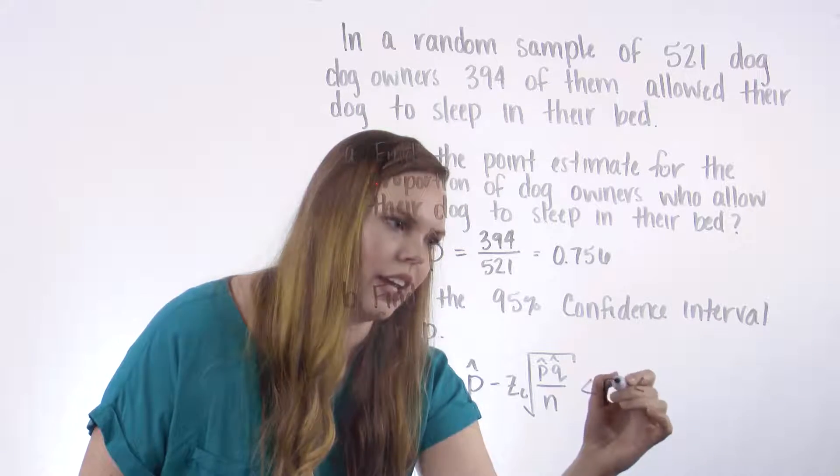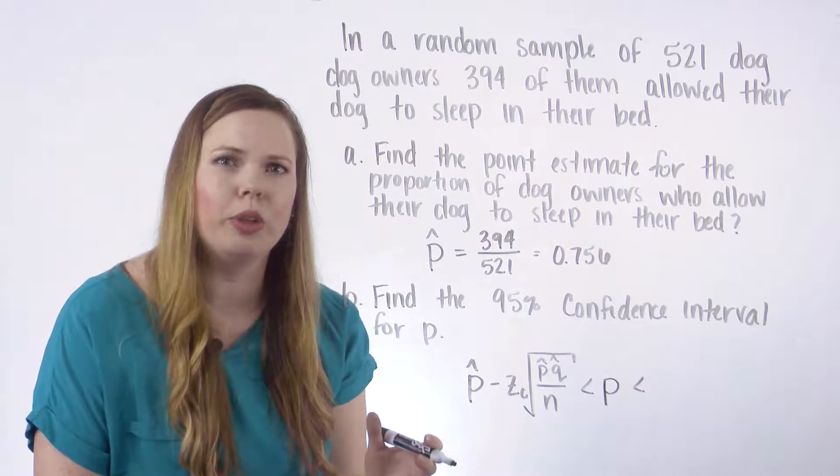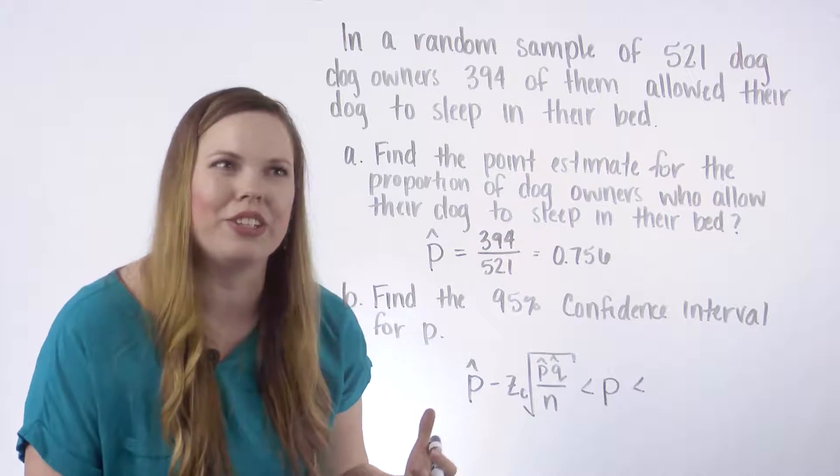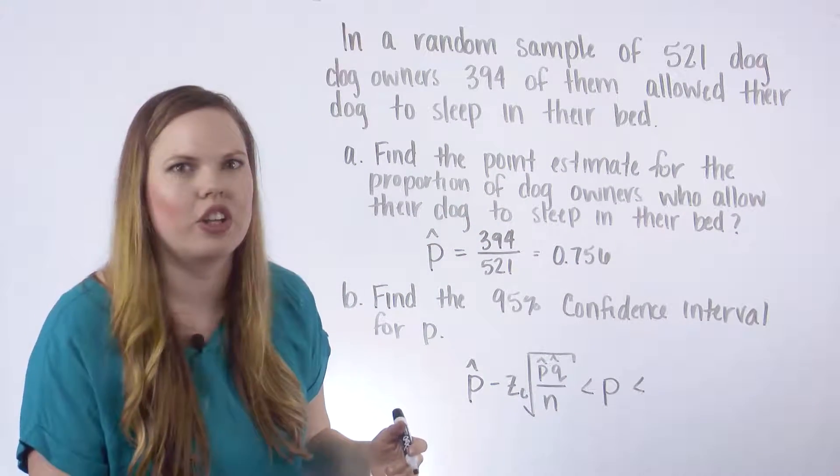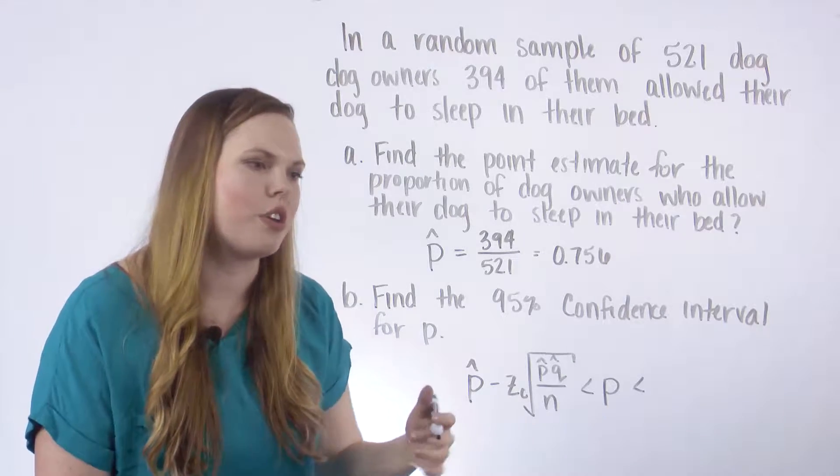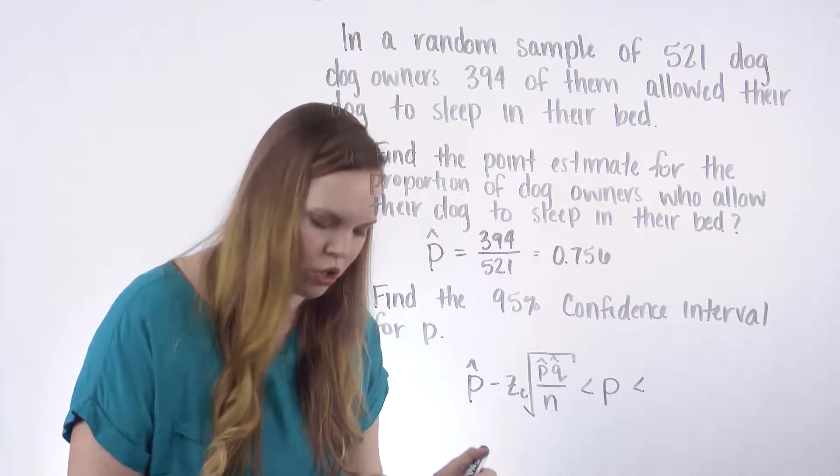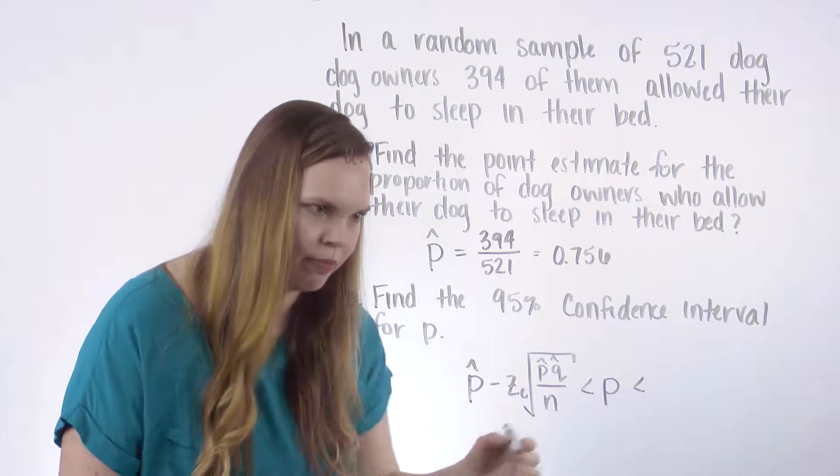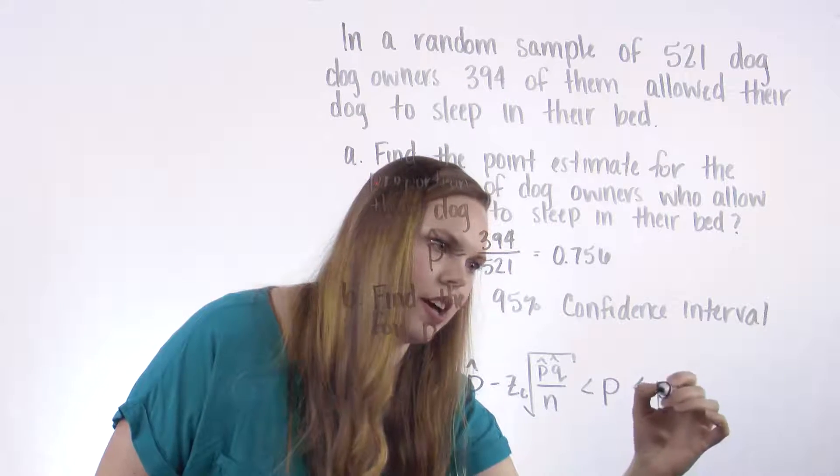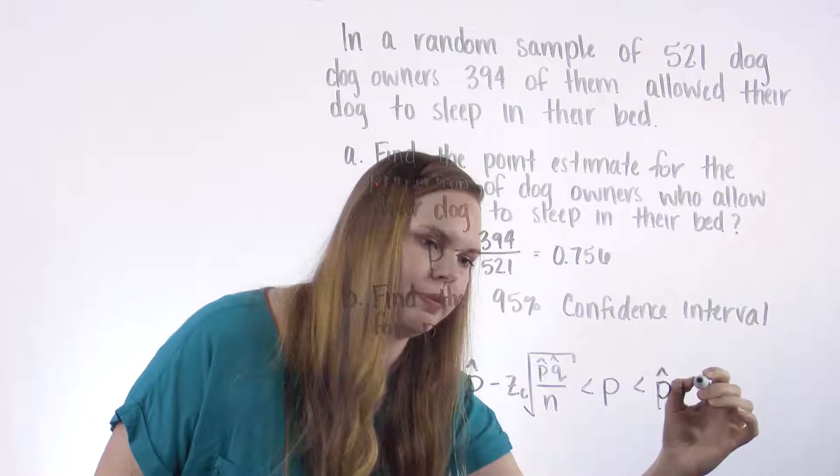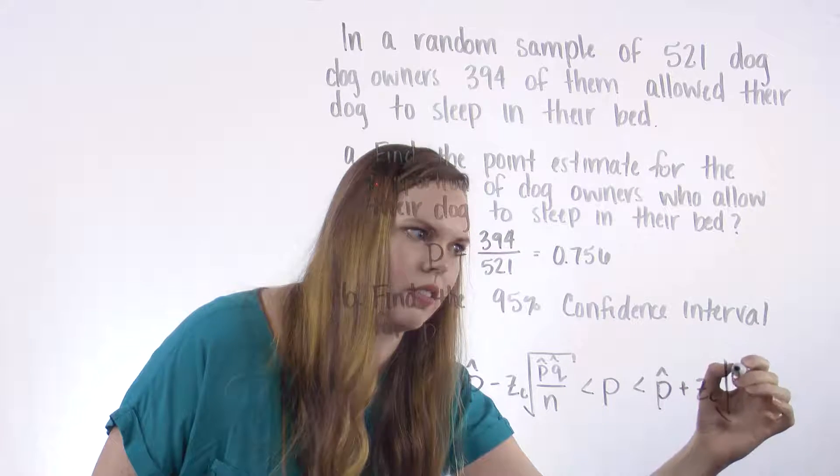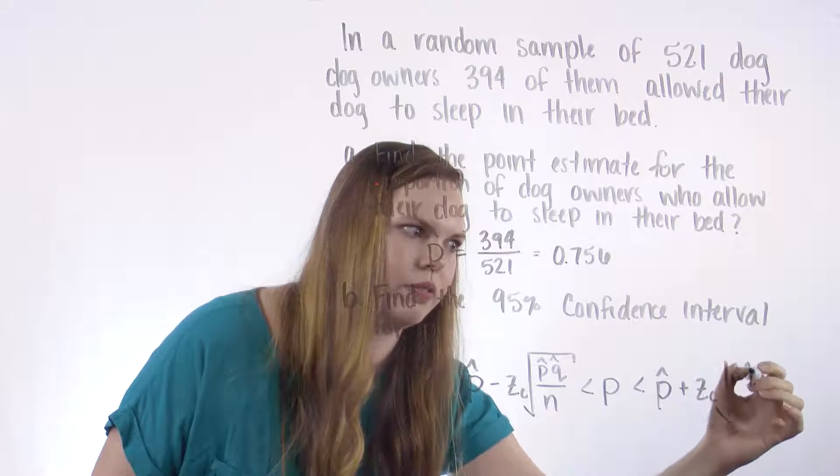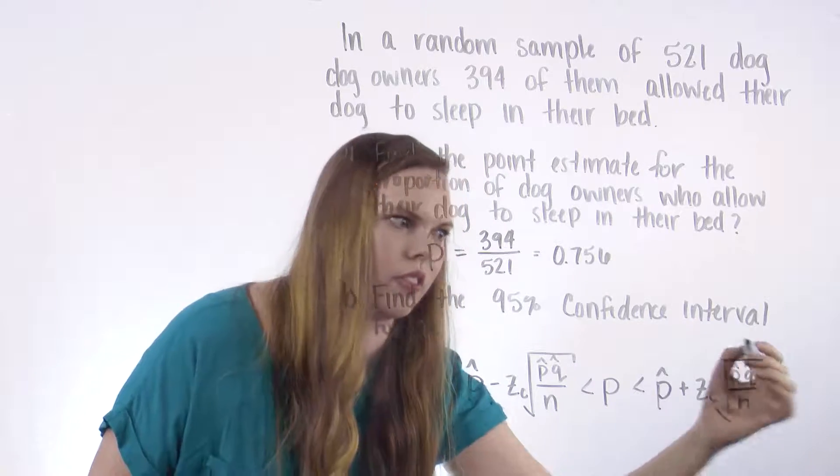And we are estimating P, the true proportion of the entire population. Of course, we don't have the entire population surveyed here. There's more than 521 dog owners. So we're using this sample to estimate the proportion of the population. Same thing on this other side, but we use a plus sign.